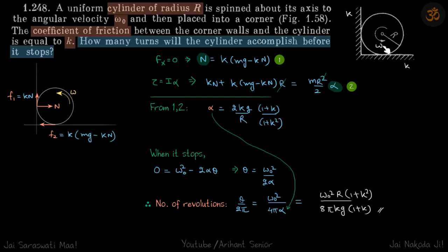We are given a cylinder that's rotating with a given angular velocity omega knot and it's kept in a corner. Both the surfaces of the corner are rough. We need to find how many turns it will go before it stops.